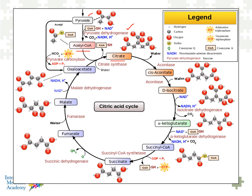Another entry point is at alpha-ketoglutaric acid. Again, it is a dehydrogenase enzyme that requires the same nutrients that pyruvate dehydrogenase does. Another entry point is succinyl coenzyme A, as well as fumarate, or what's called fumaric acid.